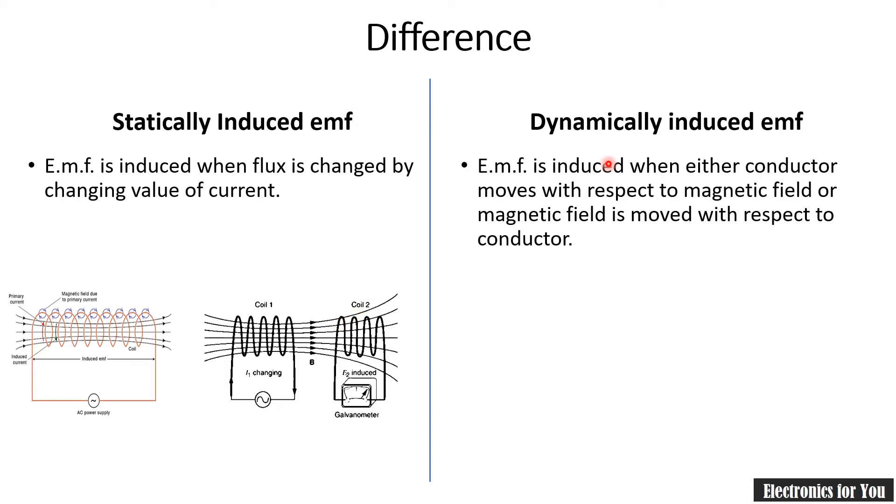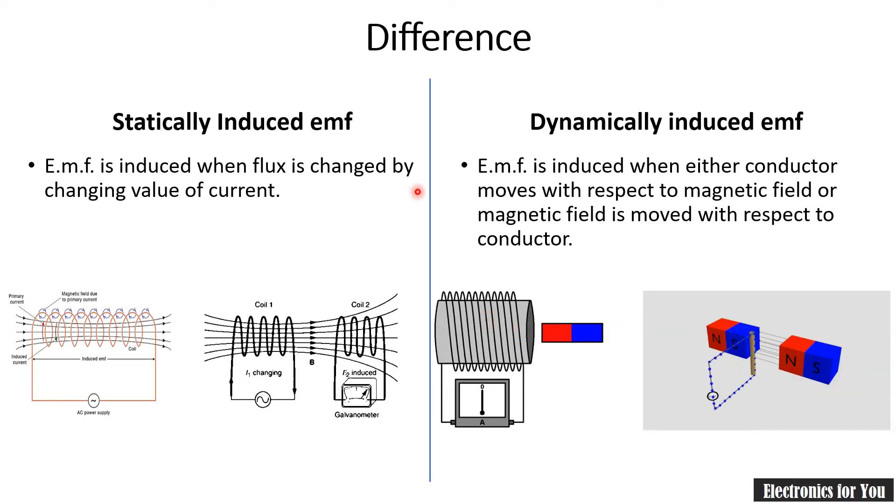In case of dynamically induced EMF, EMF is induced when either the conductor moves with respect to magnetic field or magnetic field moves with respect to conductor. In this case, the magnet is moving, meaning the magnetic field is moved and conductor is stationary, whereas in this case the conductor is moved and magnetic field is stationary.